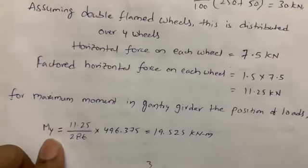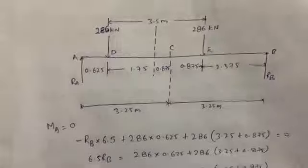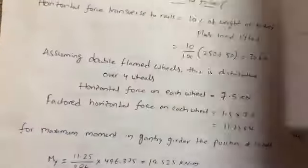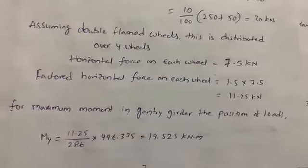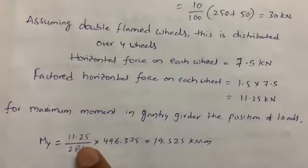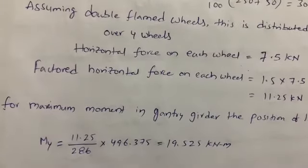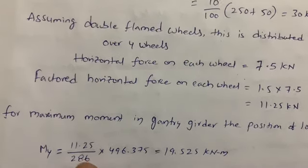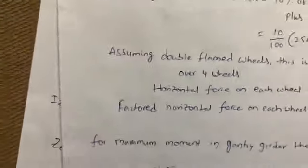A horizontal force also acts on the gantry girder. By proportioning — horizontal load 11.25 kN divided by vertical load 286 kN, multiplied by the previously calculated moment value — the maximum moment in the gantry girder due to horizontal force is 19.525 kN·m.